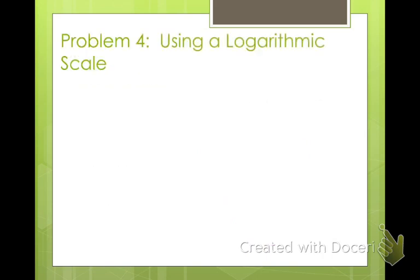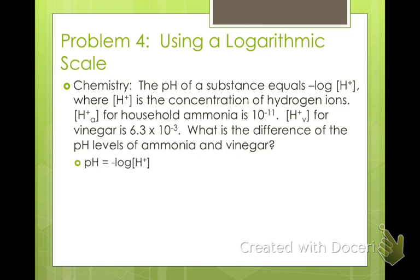Moving right along here. Using a logarithmic scale in chemistry. How many of you are in chemistry? It should be all of you, I think. The pH of a substance equals the negative log of your hydrogen ions. Look where H positive is the concentration of hydrogen ions. I remembered stuff. So hydrogen ions for household ammonia is 10 to the negative 11th power, and then for vinegar is 6.3 times 10 to the negative 3rd. So what's the difference of the pH levels of ammonia and vinegar? So difference means we're going to subtract them.